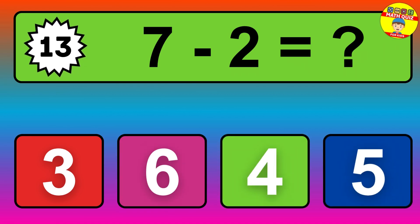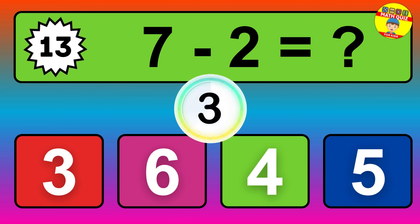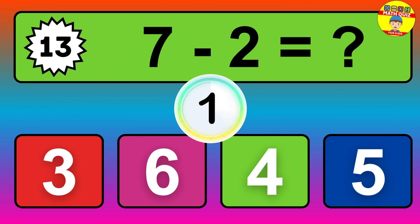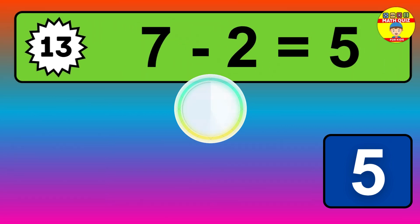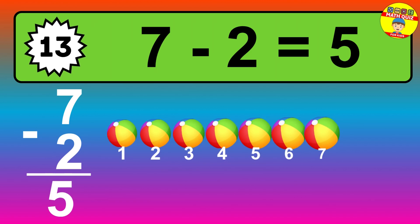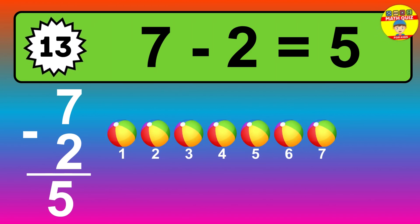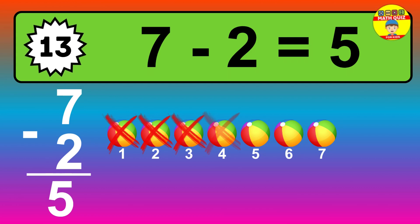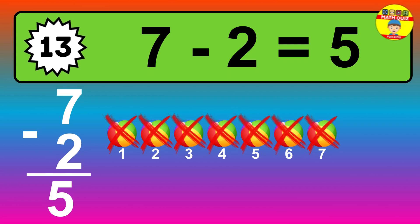Question thirteen: seven minus two equals what? So the answer is seven minus two is five. Let's count it: one, two, three, four, five.